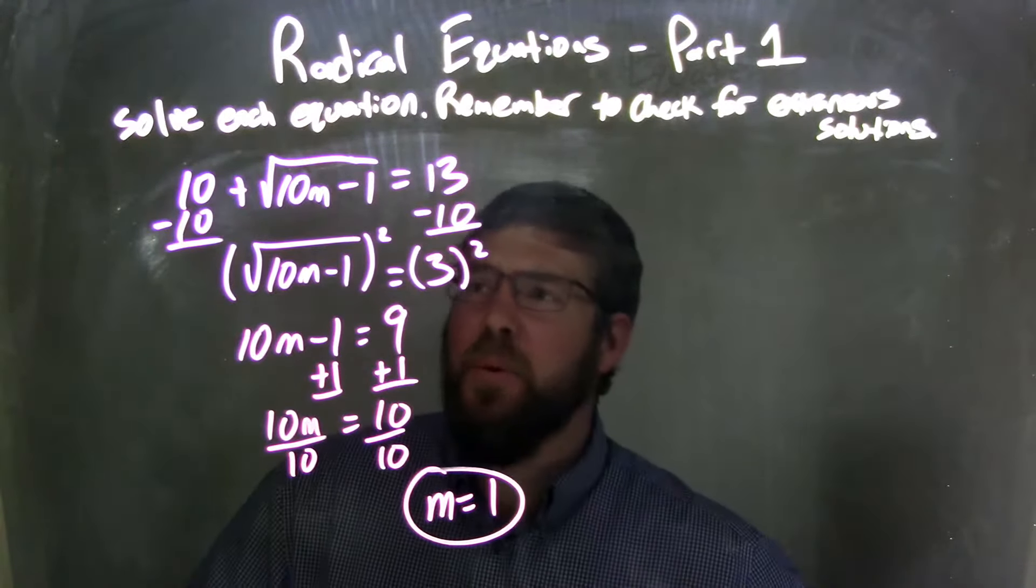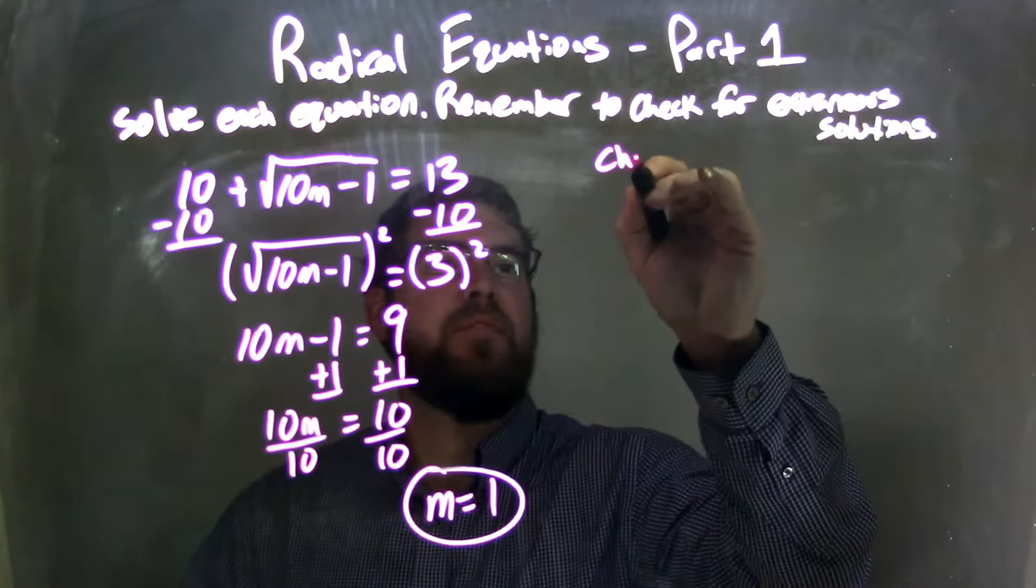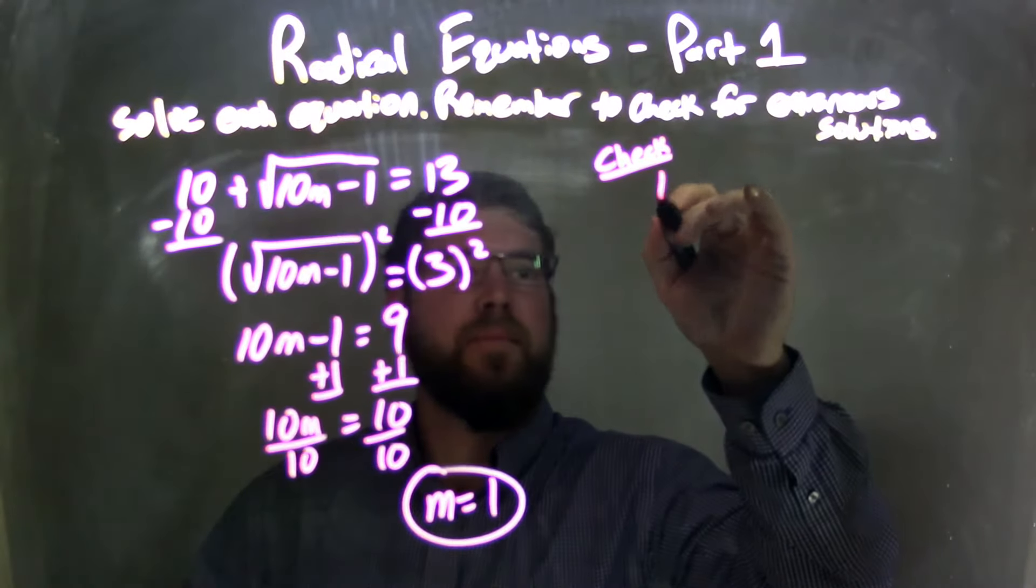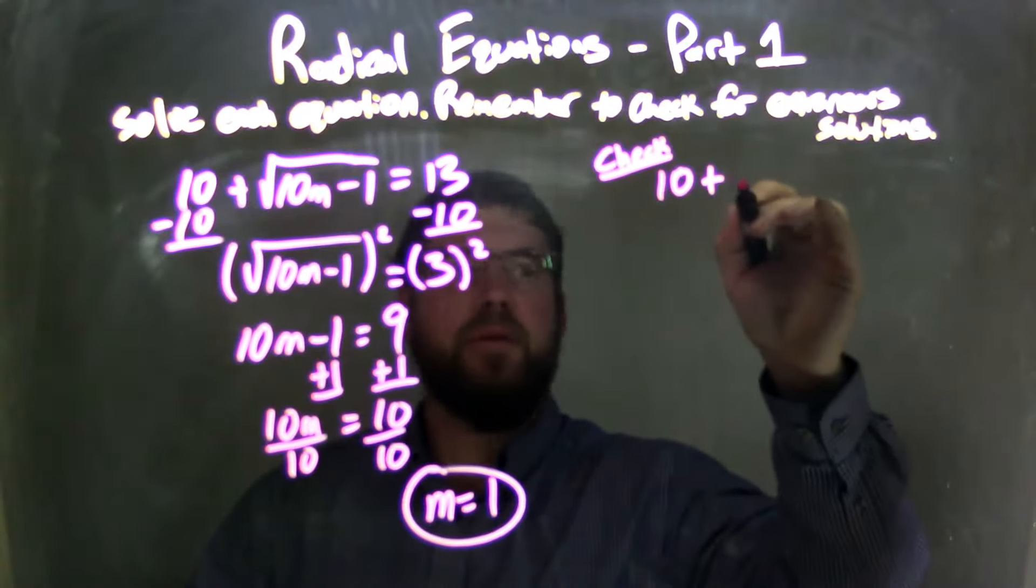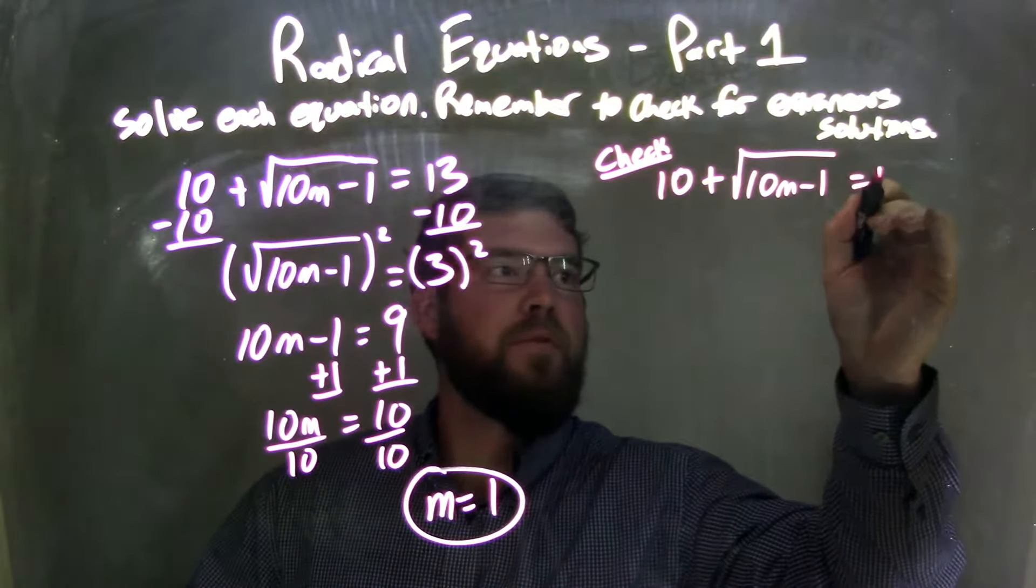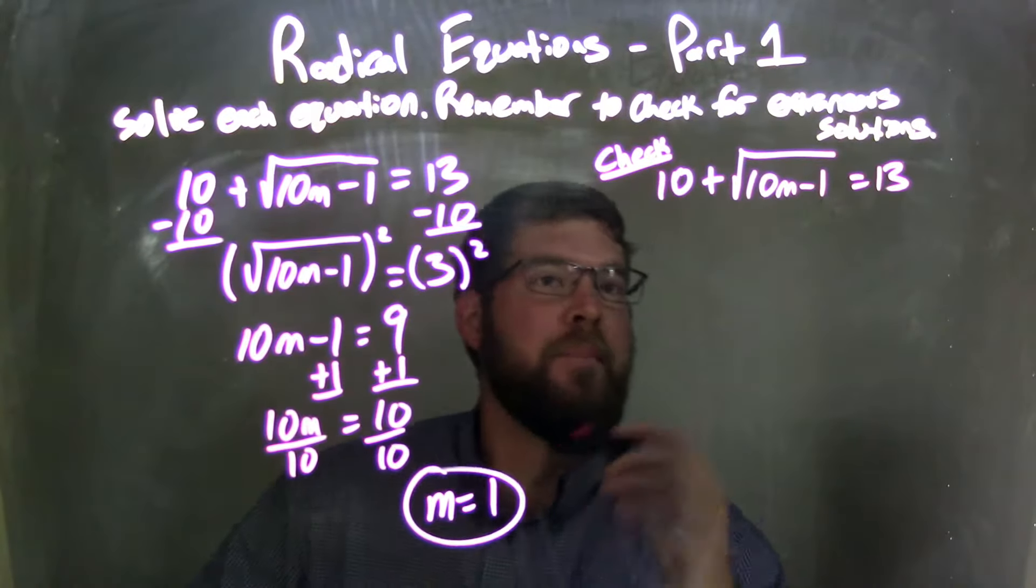Well, we need to check to see if that's the correct answer, so I'm going to do my check over here. I'm going to rewrite my equation: 10 plus square root of 10m minus 1 equals 13. Then I'm going to plug 1 in for m.